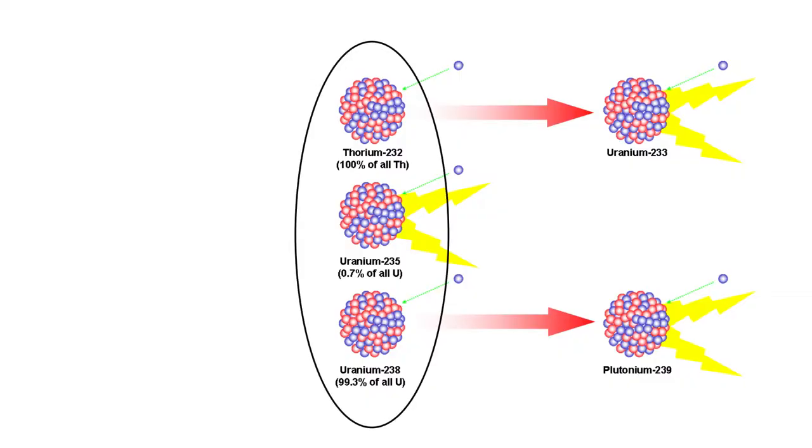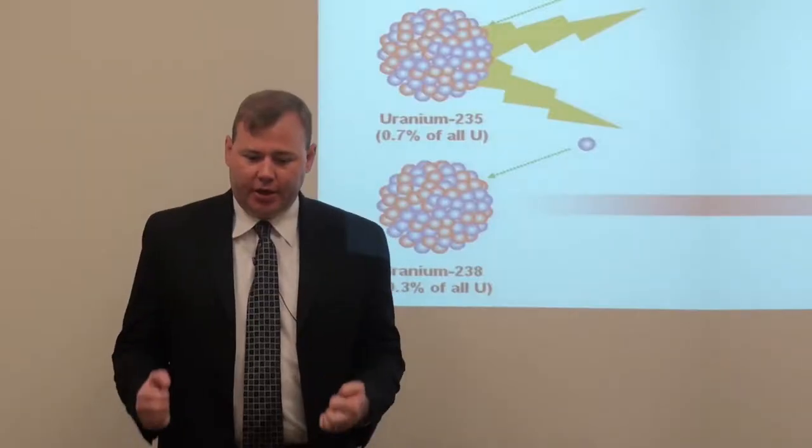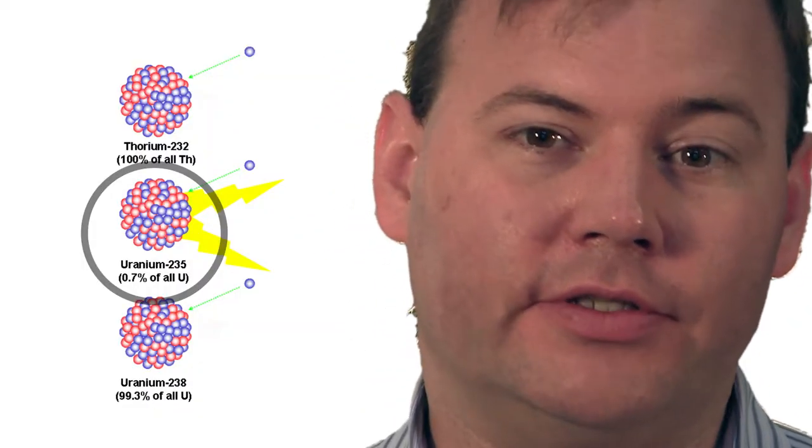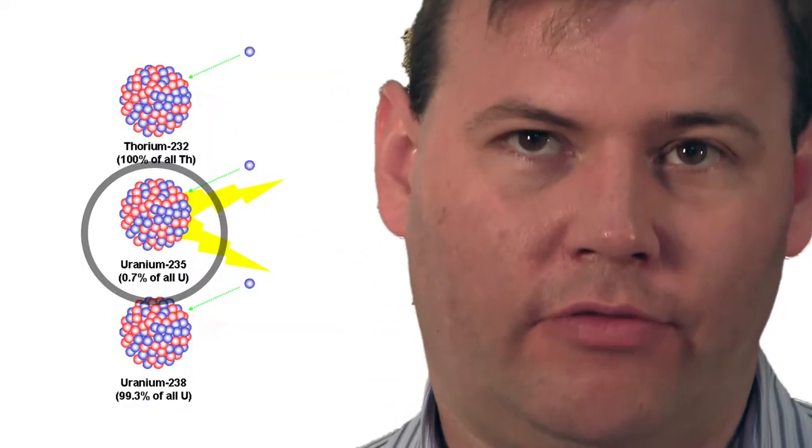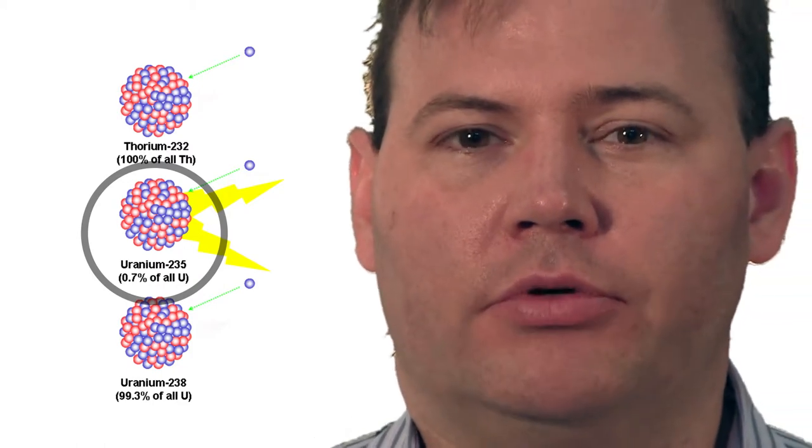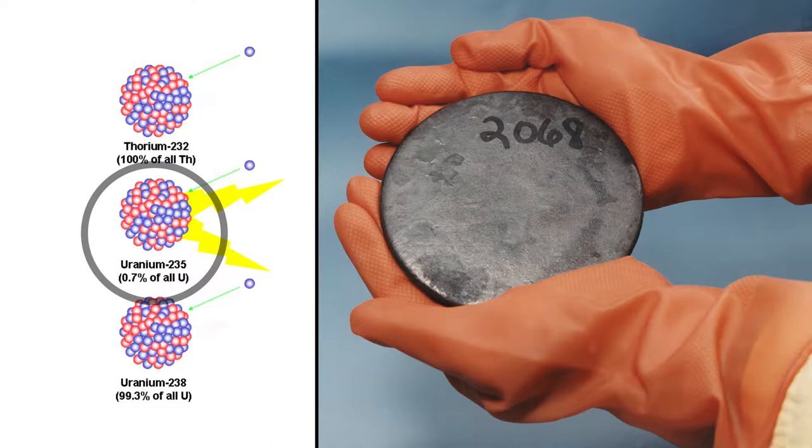There really were three options for nuclear energy at the dawn of the nuclear era. Only one of the materials in nature is naturally fissile, and that's uranium-235, which is a very small amount of natural uranium, about 0.7%. This was the form of uranium that could be utilized directly in a nuclear reactor.